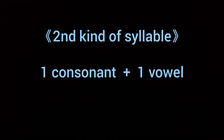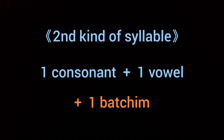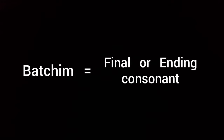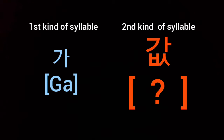But the second one consists of one consonant, one vowel, and one 받침. I call this the second kind of syllable for the convenience of it. The 받침 means final consonant or ending consonant. As you can imagine, it's more difficult to pronounce than the first kind of syllable.